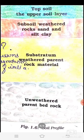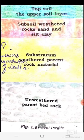बच्चों, यह एक diagram है जो बताता है कि किसी particular area में मिट्टी किस तरह से formation करती है। सबसे ऊपर top soil होती है जिस पर हम रहते हैं। उसके नीचे weathered rock से बनी layer होती है — sand और silt से। फिर उससे नीचे weathered parent rock material, और सबसे नीचे unweathered parent bed rock होती है। Friends, आज के लिए इतना ही — एक part बाकी है जो कल finish होगा। Thank you.